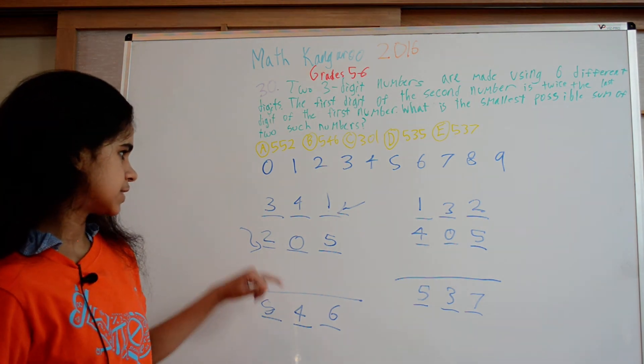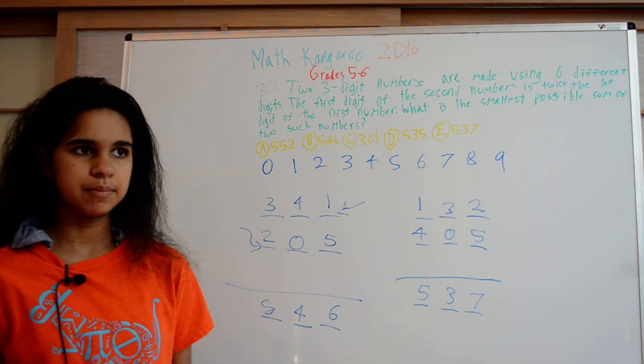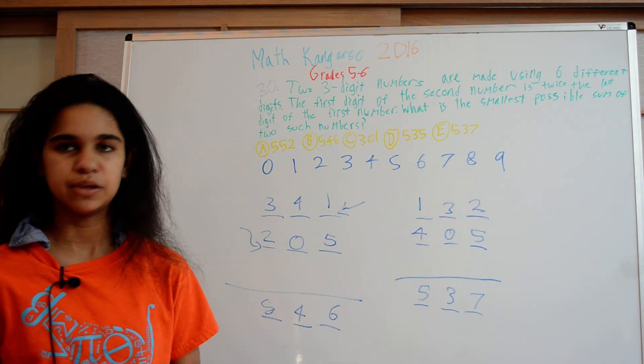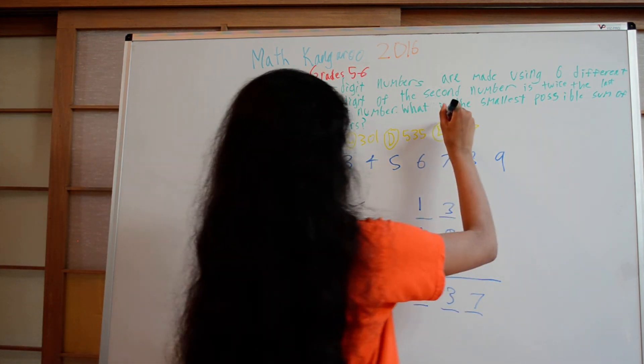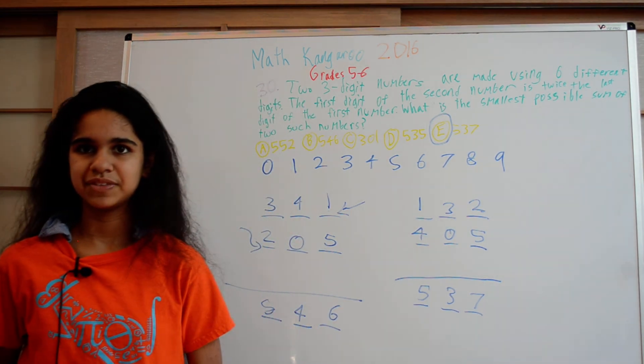These were our two options of what we could put there. We minimized the number in both cases, so there's no way we can get a smaller number than that. The answer is E, which is 537. Thank you.